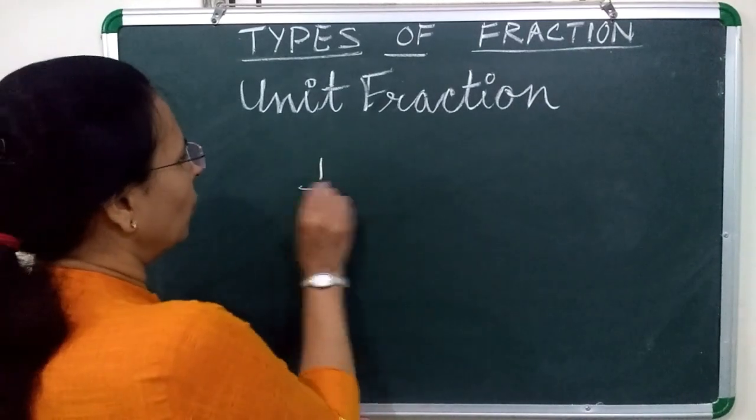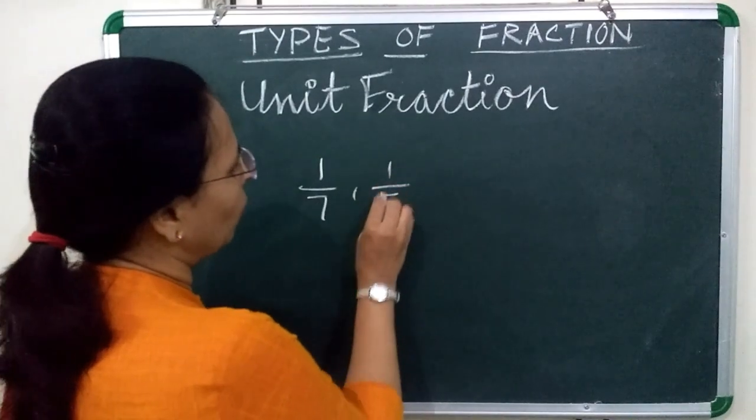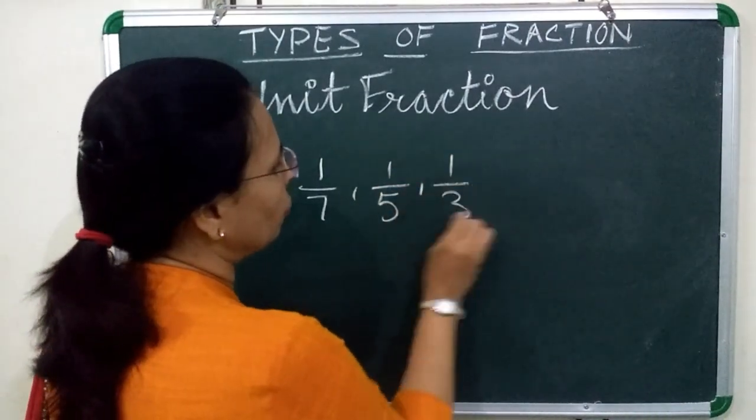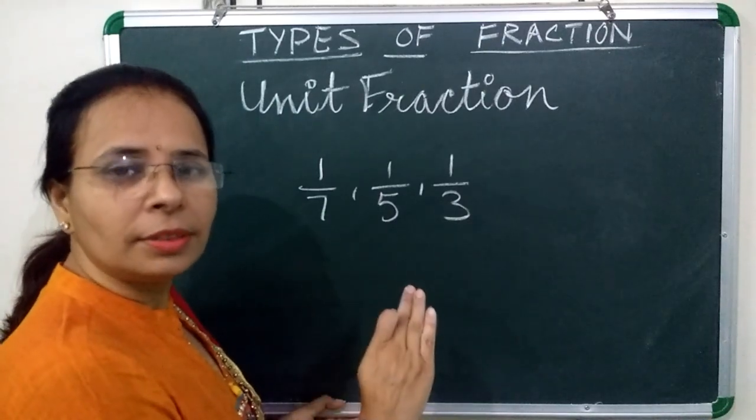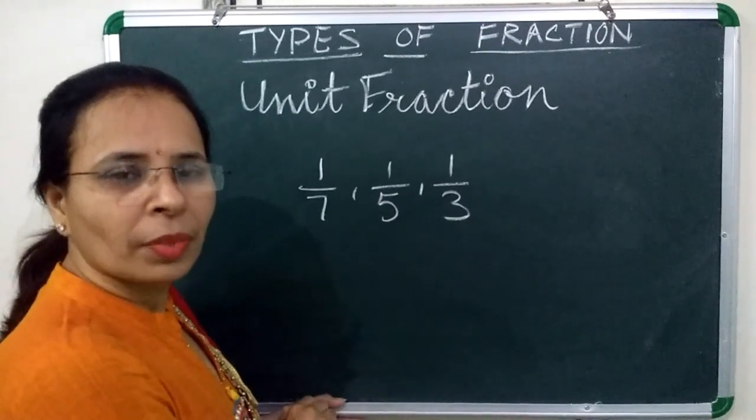For example, 1 upon 7, 1 upon 5, 1 upon 3. These are unit fraction because their numerator is 1.